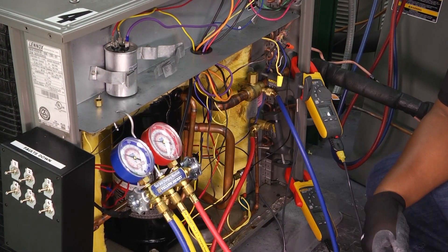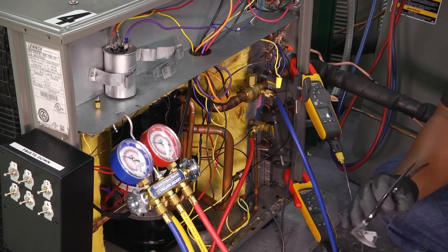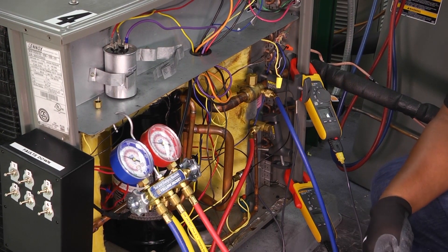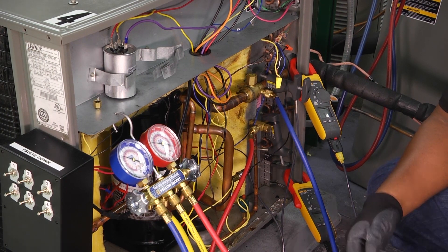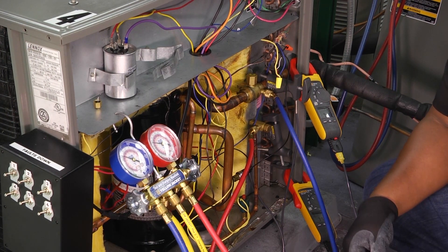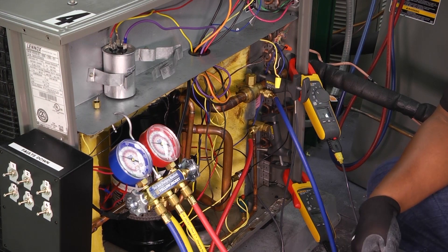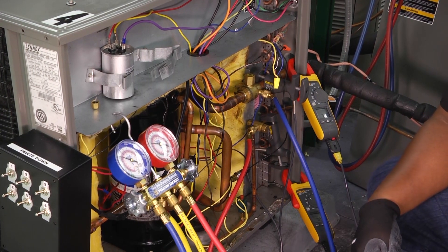As I mentioned, anytime we work with refrigerant, we want to make sure that we have eye protection and that we're wearing safety gloves, especially when disconnecting hoses or gauges. We want to make sure that we don't put ourselves in harm's way and then not be able to go back to work.